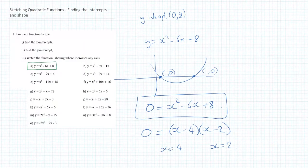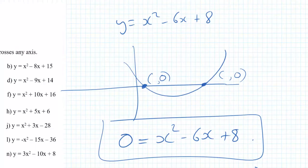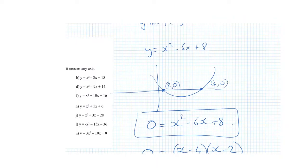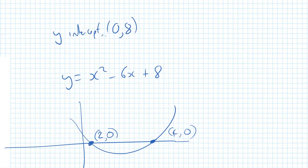So I've found those coordinate points. x is equal to 4 and x is equal to 2. I could put them in here, 2 and 4, and we've got those as well. So let's make a note of that. We've got x-intercepts at 2, 0 and 4, 0.